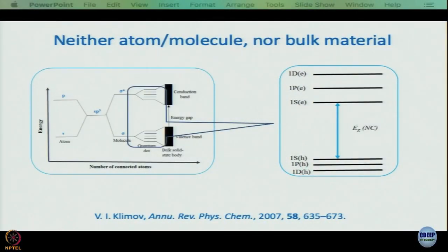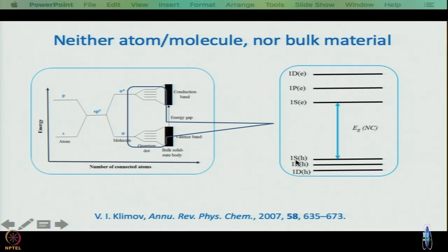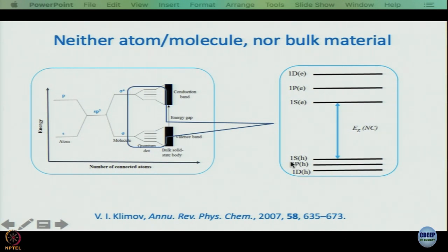Nanoparticles have bands like in bulk, but within the bands they also have discrete energy levels. In the NL nomenclature, L refers to the angular momentum of the exciton: if it is 0 the level is designated S, if 1 it is P, if 2 it is D, and so on. The lower levels are designated H because after excitation those lower energy levels are occupied by holes, and higher ones by electrons. N denotes the number of levels of a particular angular momentum — for example, 1S is the first level with angular momentum 0, and 1P is the first level with angular momentum 1.